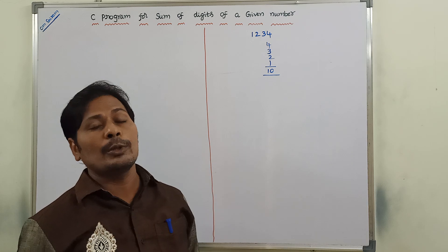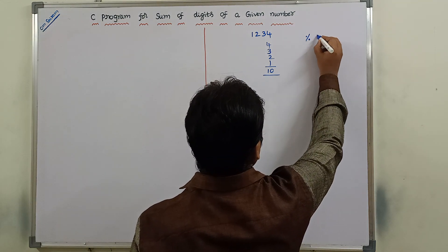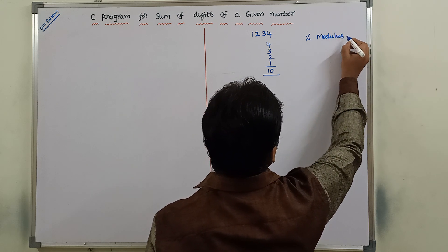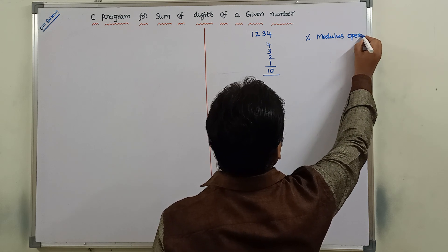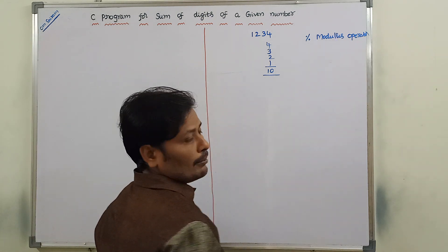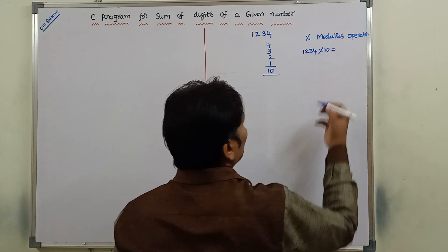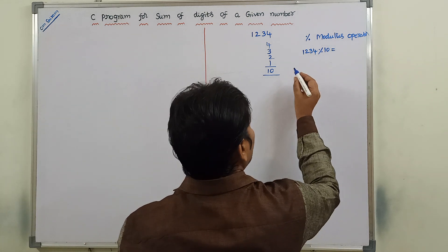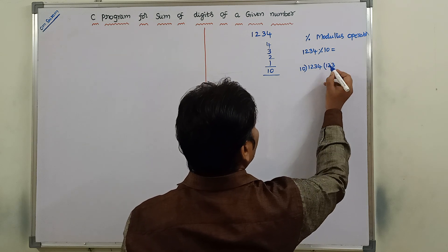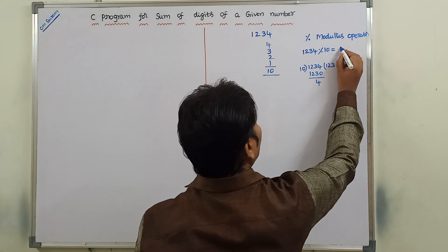First, how are we finding out the individual digits of a given number? For that, we are using the modulus operator. By using this modulus operator, we have to find out the individual digits of a given number. For example, 1234 modulus operator 10 — that means 1234 is divided by 10, it returns the remainder value. The remainder we are getting is 4.